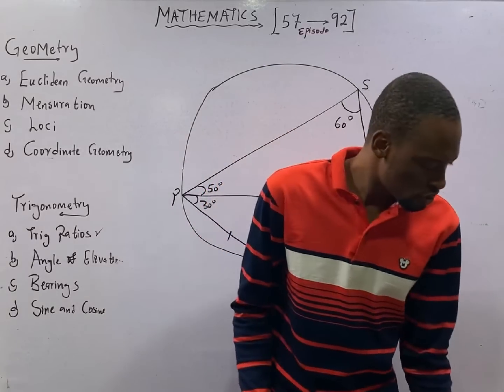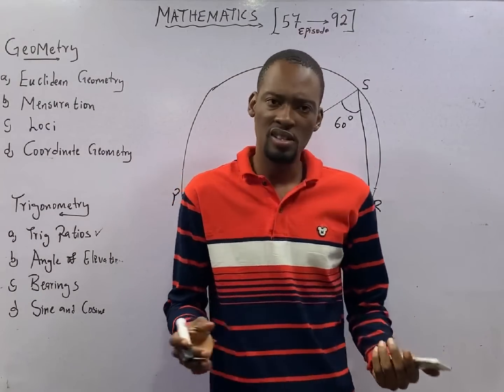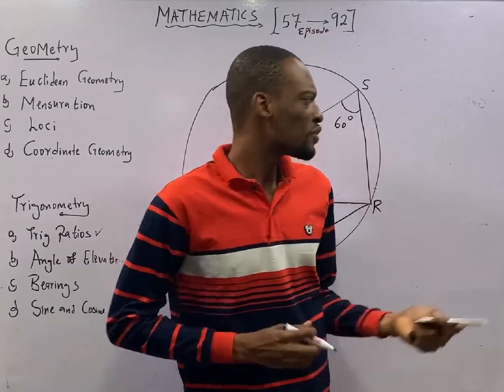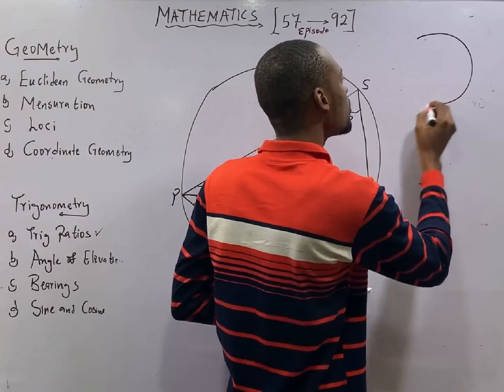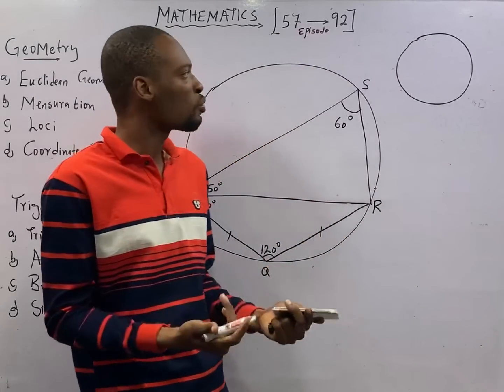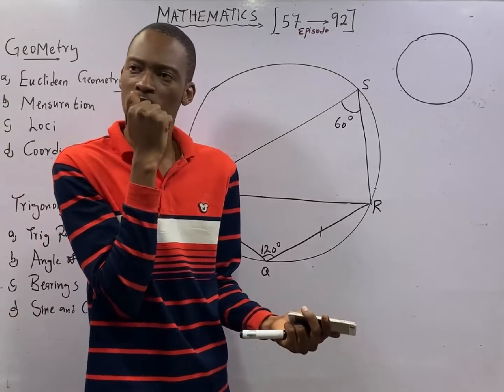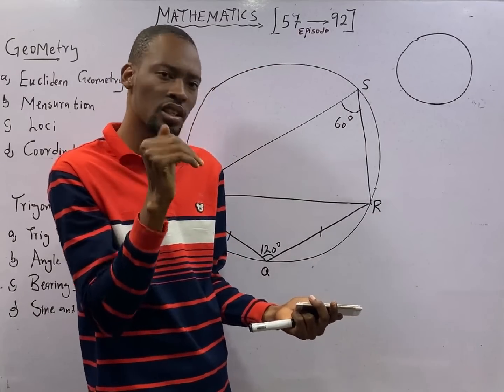In this episode, we shall be looking at a question under circle theory. If you have something like this, this is a circle. And what we know so far is that the sum of angles in a circle is 360 degrees.